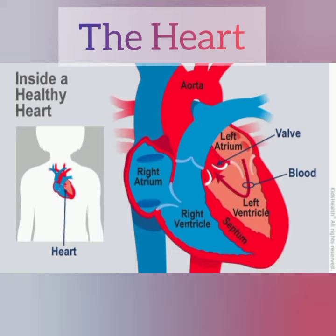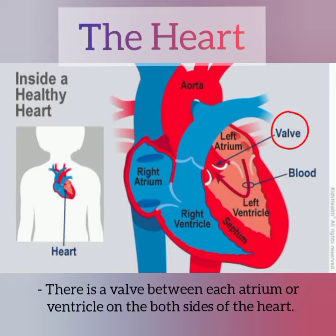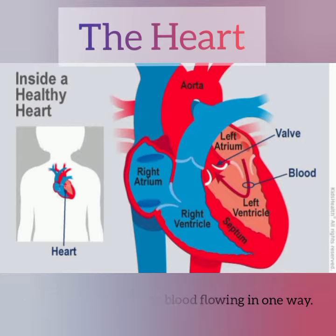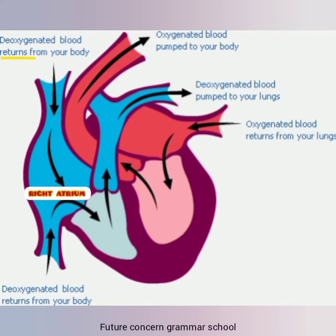There is a wall between each atrium and ventricle on both sides of the heart. Dil mein dono taraf har atrium aur ventricle ke darmiyan wall mojood hoti hai. These walls keep the blood flowing in one way. Yeh walls khun ke bahao ko yak-taraf rakhte hain.